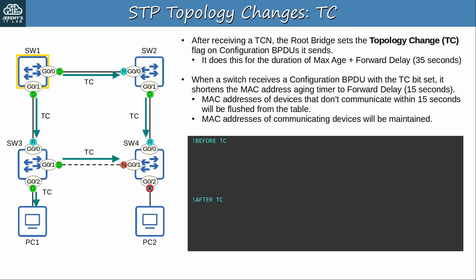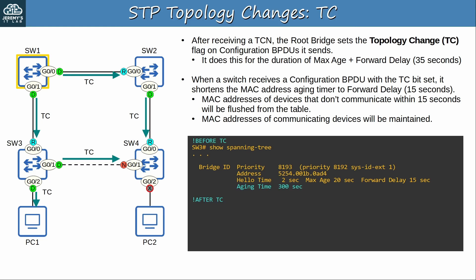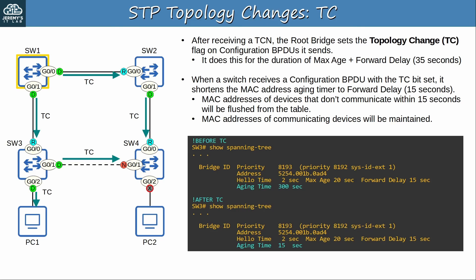Let's take a look. So before receiving the BPDU with the TC flag set, SW3's MAC address aging time is 300 seconds — the default. After receiving the BPDU with the TC flag, it shortens its MAC address aging time to 15 seconds. There's a good reason for this, and I'll explain it soon.